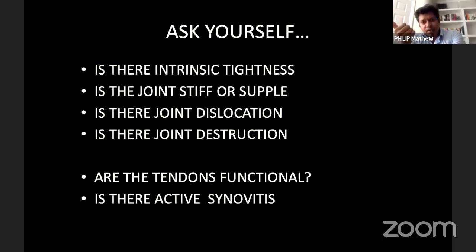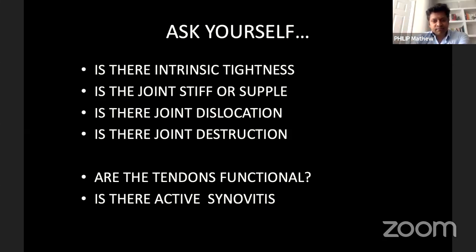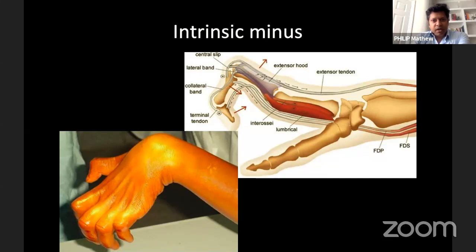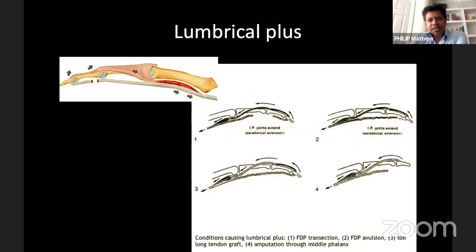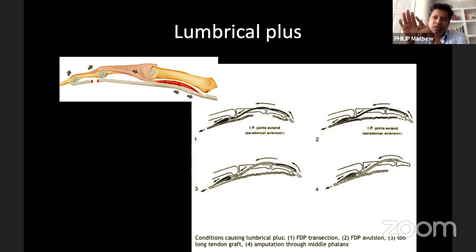To summarize: an intrinsic minus hand is when the intrinsics are paralyzed, the extensors are hyperactive, and the flexors are active — that's your claw hand. Intrinsic plus is when everything is tight — the intrinsics are very tight, bringing the MCPs into flexion and the PIPs into extension. A lumbrical plus finger is what you see after terminalizations or amputations when the FDP tendon is cut and pulls back on the lumbricals, which are attached to the extensors — so as the patient tries to make a fist, the stump actually extends.